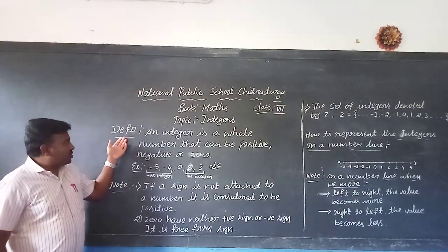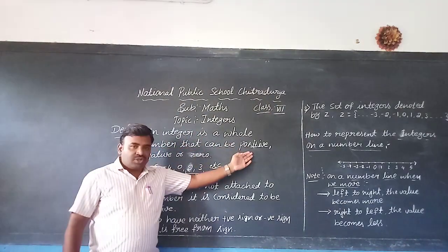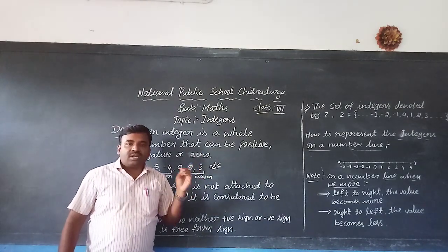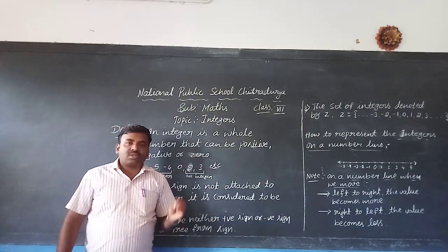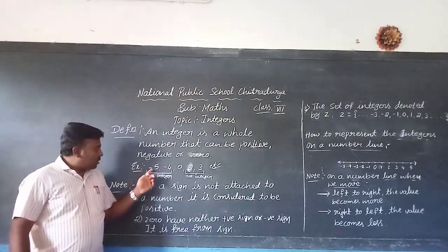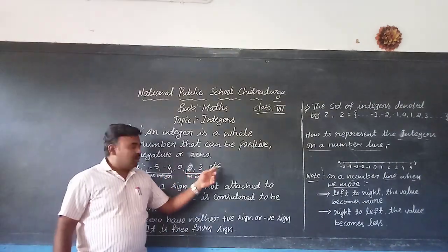Here is the definition: an integer is a whole number that can be positive, negative or zero. That means integer includes the whole positive numbers, negative numbers together with zero. Here is the example: minus 1, minus 4, 0, 2, 3, etc.